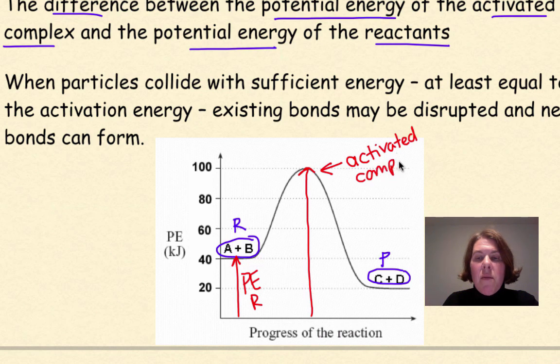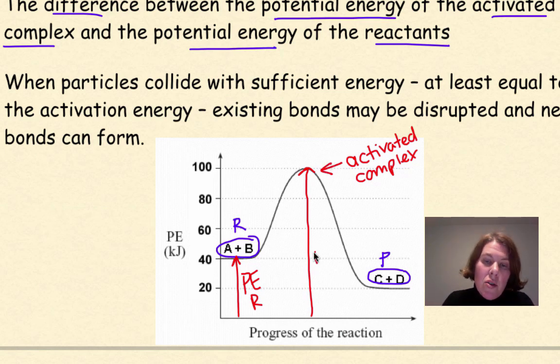So this top of this bump right here is called the activated complex, and that's not really a reactant nor a product. It's basically our intermediate, and it's very, very unstable.